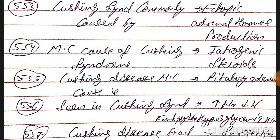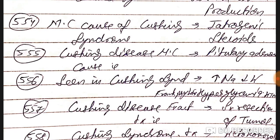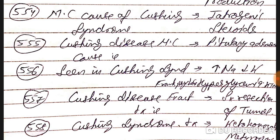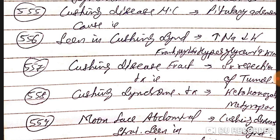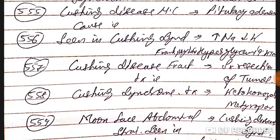Cushing syndrome is most commonly caused by ectopic ACTH production. However, the most common overall cause of Cushing syndrome is iatrogenic steroid use. Cushing disease — the most common cause is pituitary adenoma.